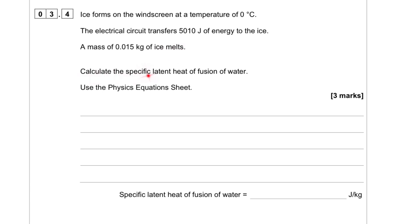Calculate the specific latent heat of fusion of water. We know that Q is the energy in this case, and that equals ML, where L is the specific latent heat.